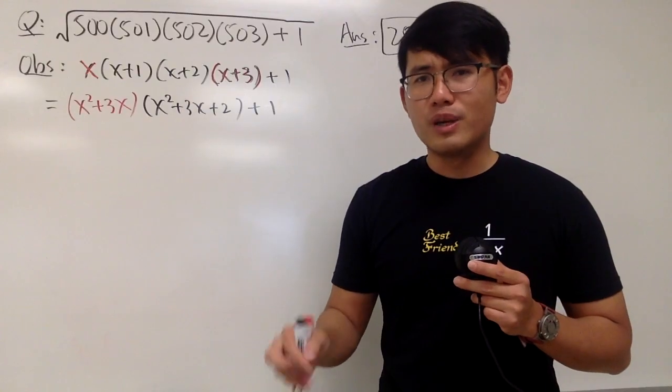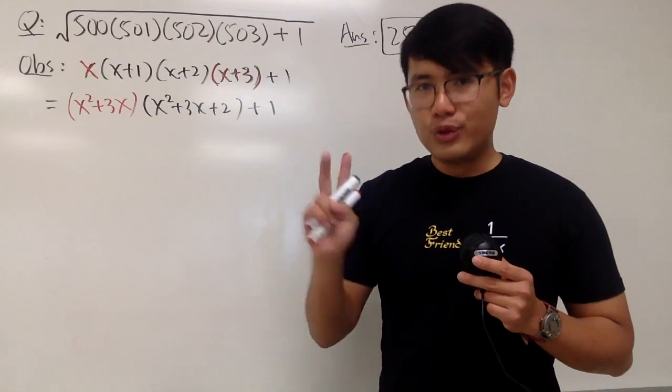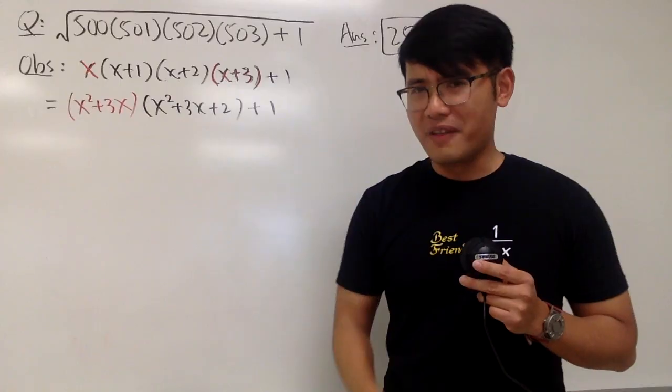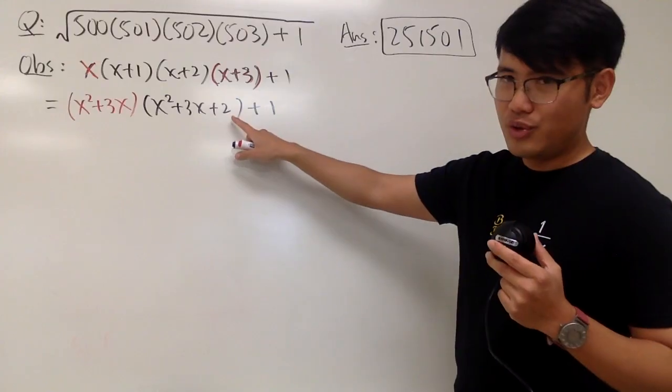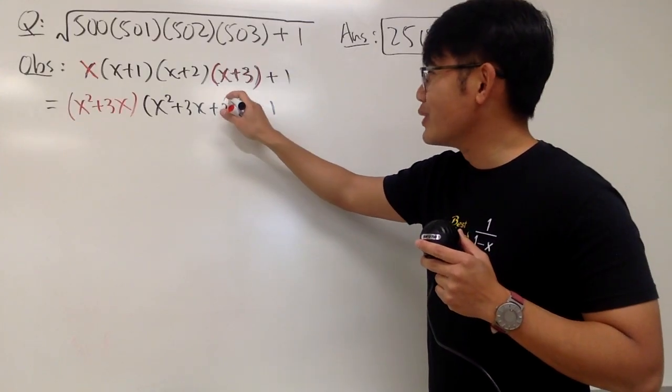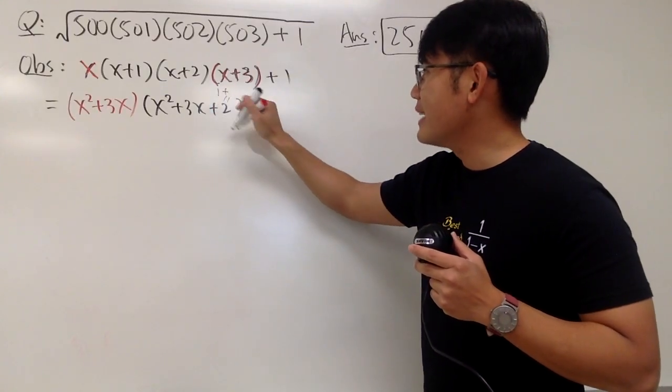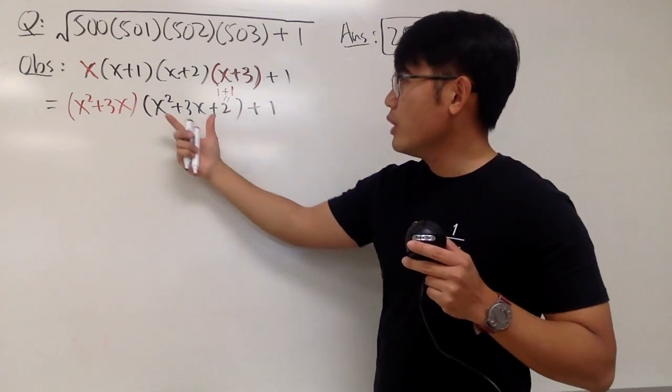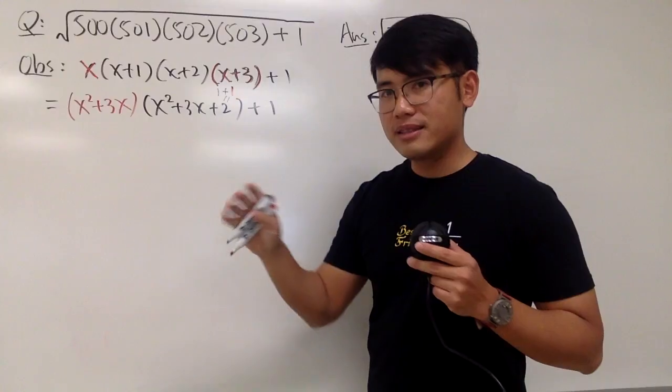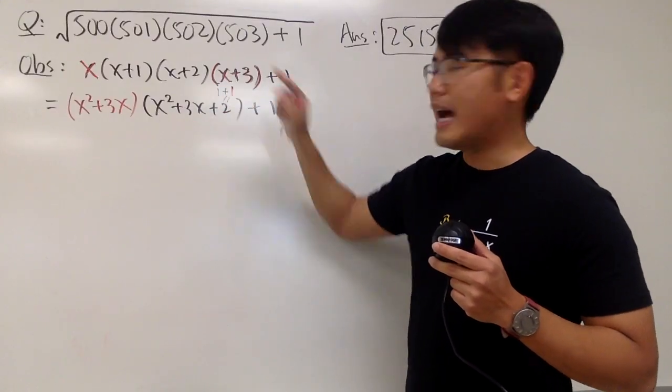Everybody knows 1 plus 1 is equal to 2. But I know 2 is the same as 1 plus 1. Whoa! I feel like a genius already. Check this out. Look at this 2. I'm going to look at the 2 as 1 plus 1. And by doing so, I can look at the inside as four terms: this, this, this and that, right?